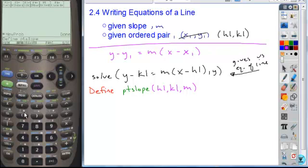In my function here, in parentheses, deselect my alpha key. In parentheses, I'm going to enter it as H1 comma K1, followed by my M value, close it off. This is the order of my inputs.